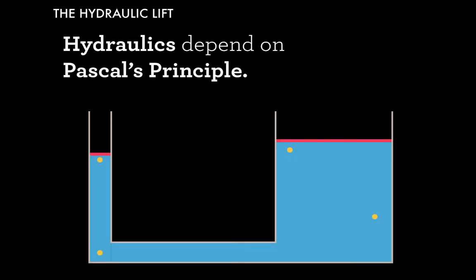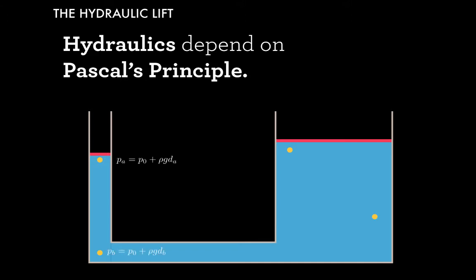All hydraulics depend on Pascal's principle. So if we have a reservoir here with several points, and we want to calculate the pressure at each of those points, we can use the hydrostatic pressure equation. The pressure at point A is equal to the surface pressure plus the density of the fluid times G times the depth of point A. Similarly, we can calculate the pressure at points B, C, and D.